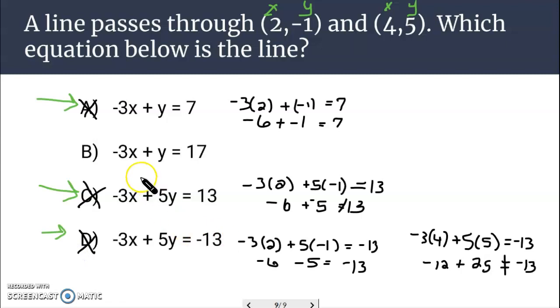Alright. So maybe B works. And if it doesn't, then none of them will work. And sometimes that happens. Alright. Trying this on the first point. Negative 3 times 2 plus negative 1. Does that equal 17? Now negative 6 minus 1 does not equal 17. So it turns out that none of these satisfy. Remember, for it to work, it has to satisfy both of them.